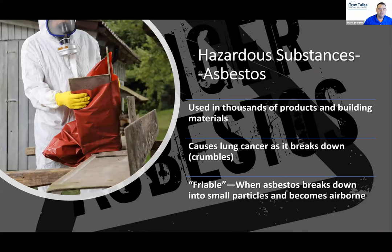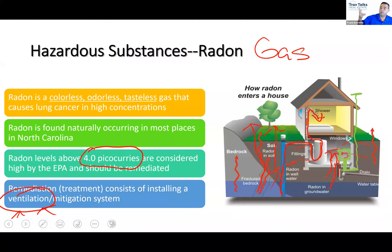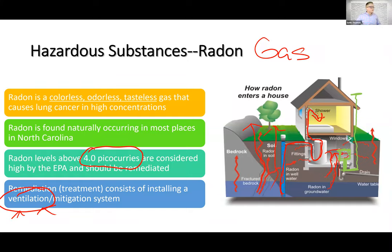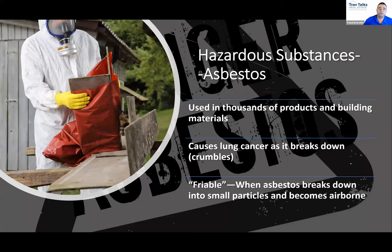For test-taking purposes on radon: it is colorless, odorless, and tasteless; it causes lung cancer in high concentrations; the action level is 4 picocuries; and the treatment is ventilation. Asbestos is an issue in older homes, similar to lead-based paint. It was also outlawed around 1978, though the exam doesn't always emphasize that year for asbestos specifically.